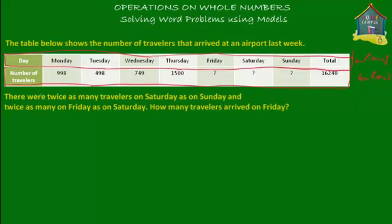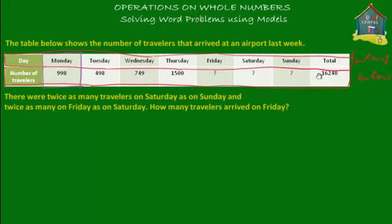The top row tells you the names of the days of the week: Monday, Tuesday, Wednesday, Thursday. The row below gives you the number of travellers that arrived. Just this part I'm marking in purple — it has Monday on top and 998 below it, so on Monday there were 998 travellers. Moving right, Tuesday has 498 below it, so 498 travellers on Tuesday. Then Wednesday had 749, Thursday had 1500. On Friday there's a question mark — we don't know that yet. And there's also a total column.